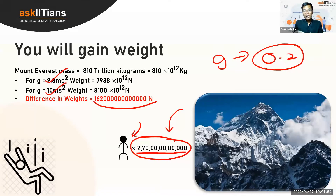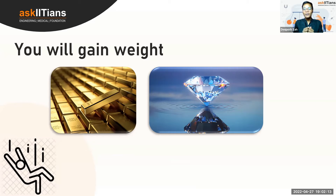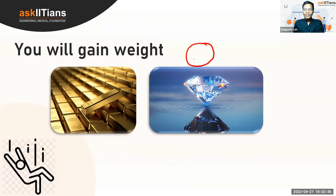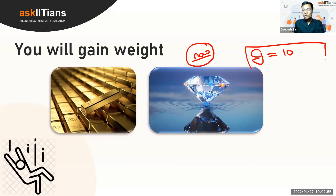The same principle applies to very precious materials like gold or diamonds. Their value is tied directly to their weight — more gold means more money. So even a slight change in weight caused by changing g can result in a huge change in monetary value. You can calculate on your own: take however much gold you have, find its weight at g = 9.8, then recalculate at g = 10, and you'll see the value changes a lot.